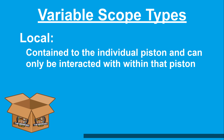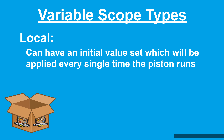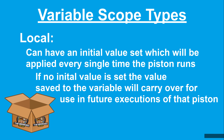Local variables are contained to the individual piston that they are created in and can only be interacted with within that piston. This means that a local variable is unique to that piston, is not shared with other pistons, and multiple pistons can safely define local variables with the same name without impact. Local variables can have an initial value set which will be applied every single time the piston runs. If an initial value is not set, the values set to the variable will carry over for future executions of that piston.